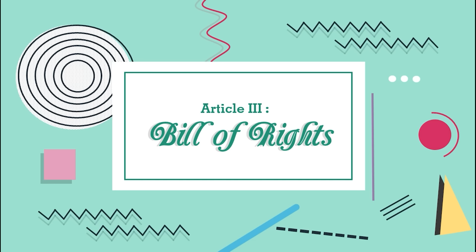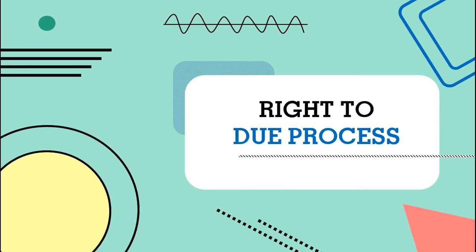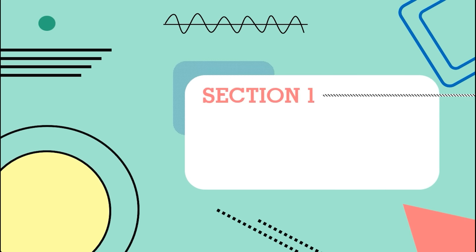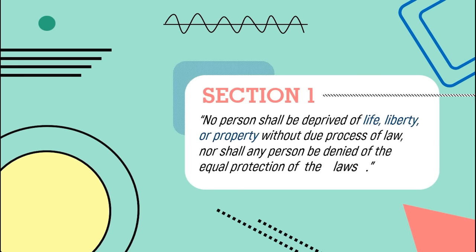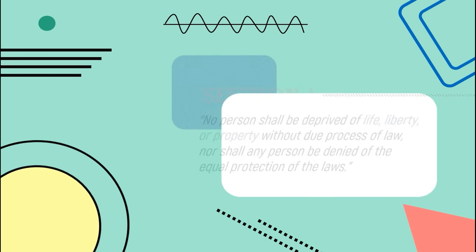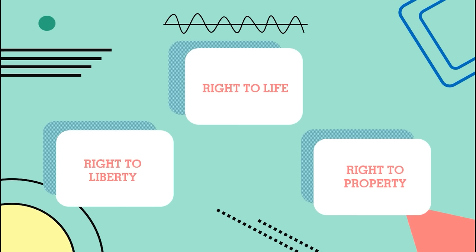In this video, we will talk about all the rights stated in the Bill of Rights. Let's start with the right to due process. Article 3, Section 1 states that no person shall be deprived of life, liberty, or property without due process of law, nor shall any person be denied of the equal protection of the laws. There are three rights mentioned under this section.